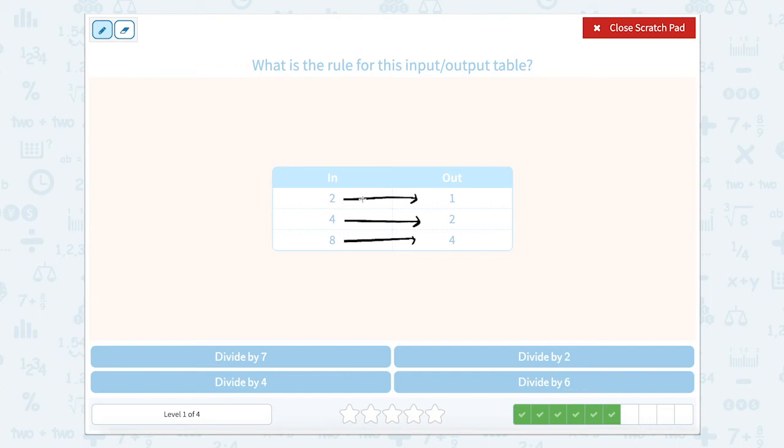So if I have 2, what do I divide by to get 1? Well, 2 divided by 1 is 2, so it's not divide by 1. 2 divided by 2, well 2 divided by 2 is 1. So let's double check that. Let's see if that's the same rule for each one. 2 divided by 2 is 1.